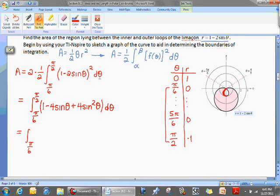And the identity that I'm speaking of deals with the double angle for cosine. And in this particular instance, sine squared of theta is equivalent to one minus the cosine of two theta all divided by two.